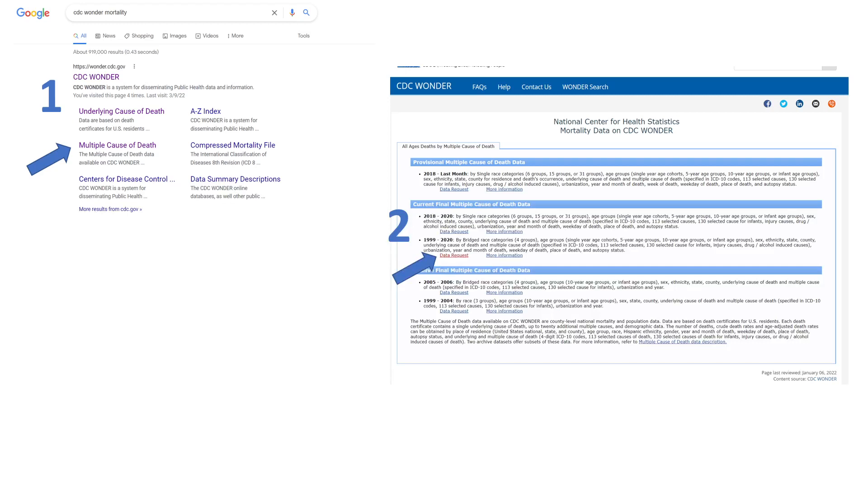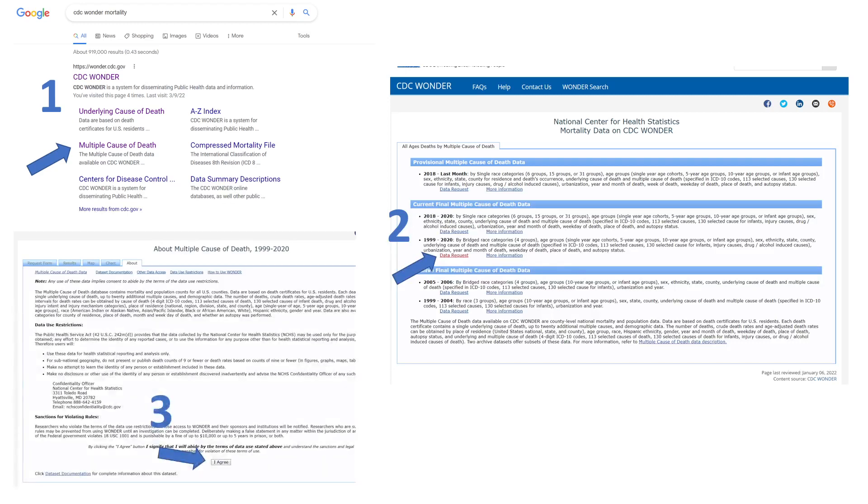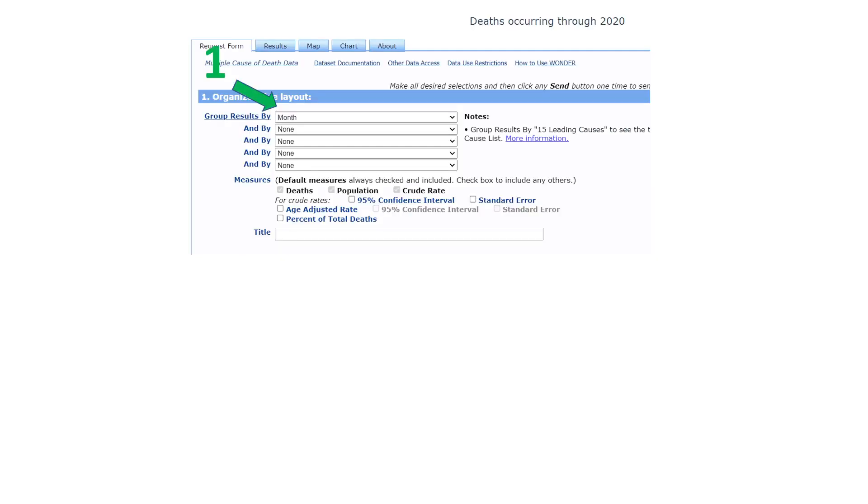The second step is to request data from this website. It takes us to a third page where it says various terms - read it if you want to, but ultimately agree to it. Once we agree, it takes us to a site where all the data is included. Here we will make only two changes.